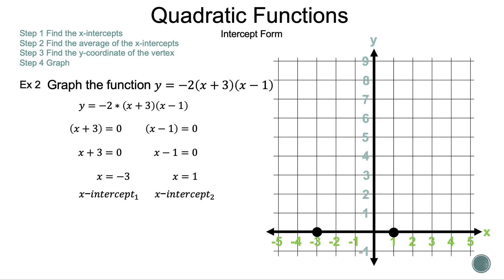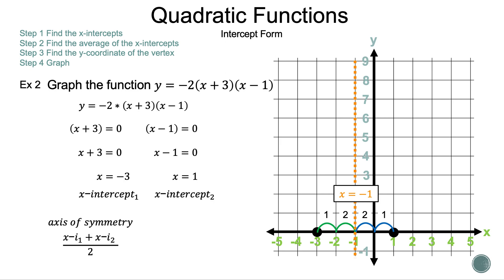The axis of symmetry is the next key piece of information. Counting from each plotted point until they meet, the axis of symmetry is x = −1. We verify algebraically by averaging the x-intercepts: (−3 + 1) / 2 = −2 / 2 = −1. Confirmed.